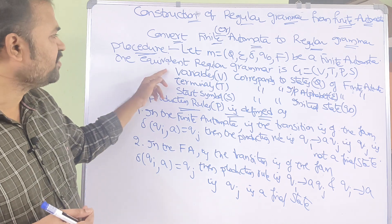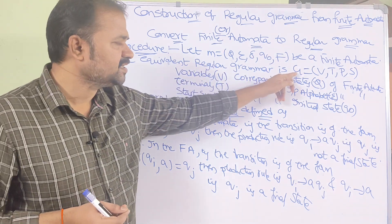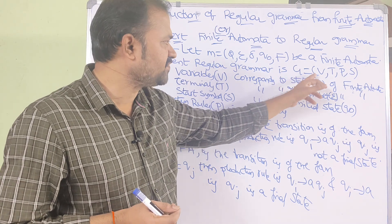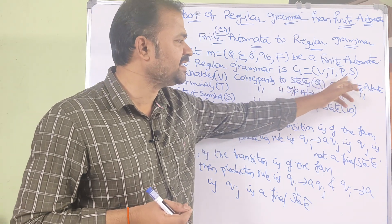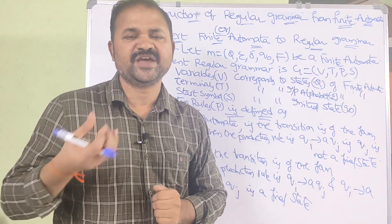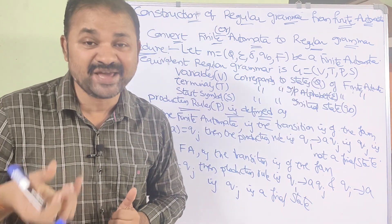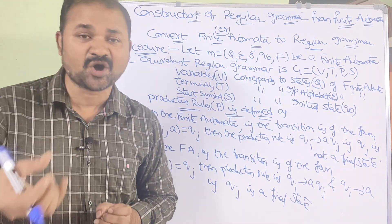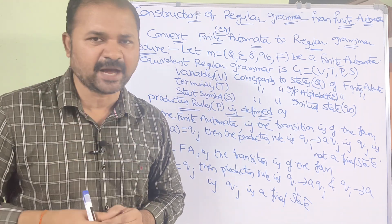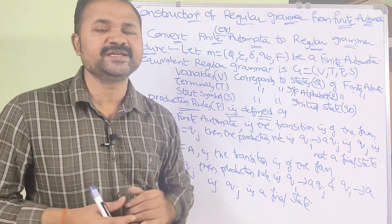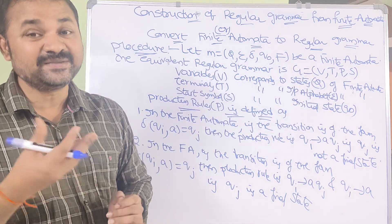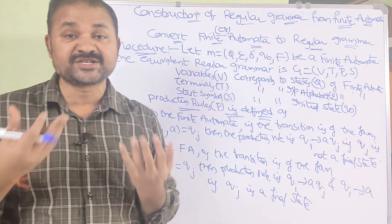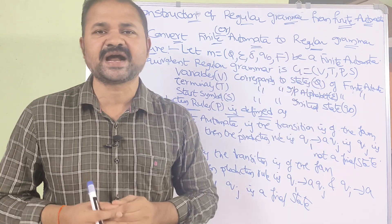The equivalent regular grammar — we know that grammar mainly contains four tuples. So G equal to (V, T, P, S), where V represents the set of variables, also called non-terminals, represented by uppercase letters. T means terminal symbols. P means production rules. S means start symbol.